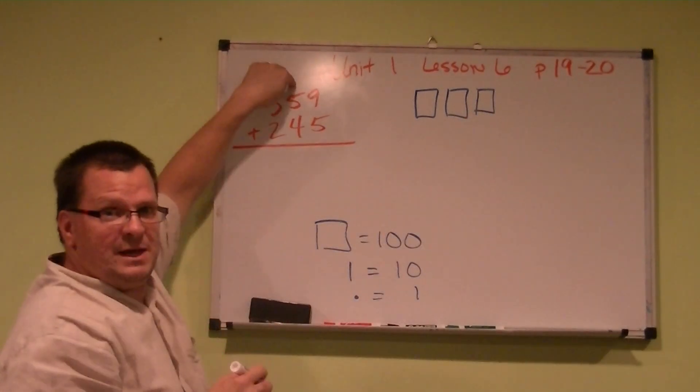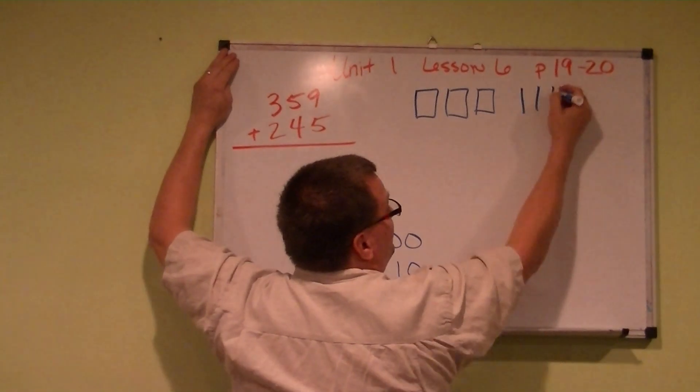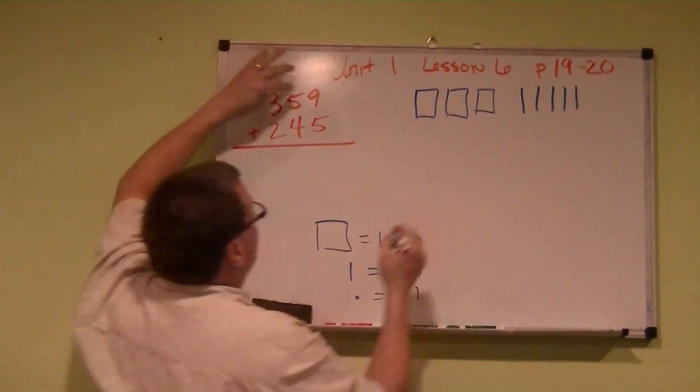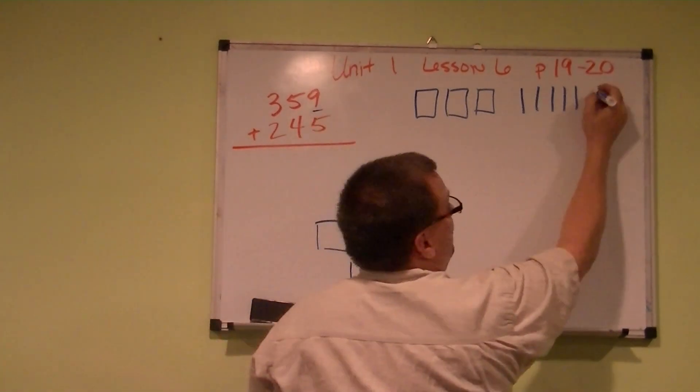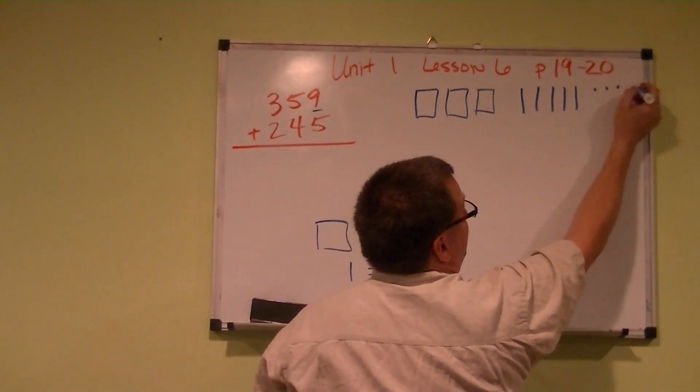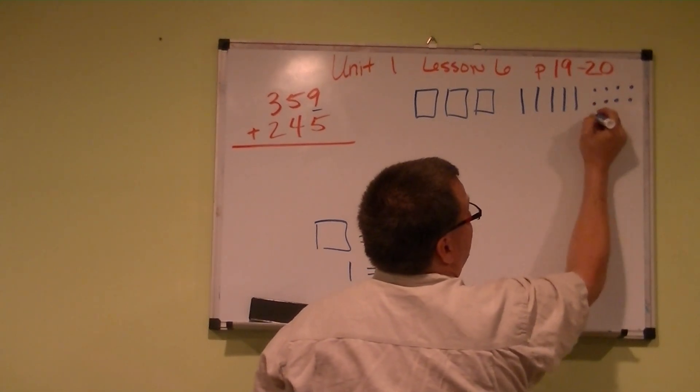How many tens do we have? We have 5: 1, 2, 3, 4, 5. And how many ones do we have? We have 9. Let me prove that out: 1, 2, 3, 4, 5, 6, 7, 8, 9.